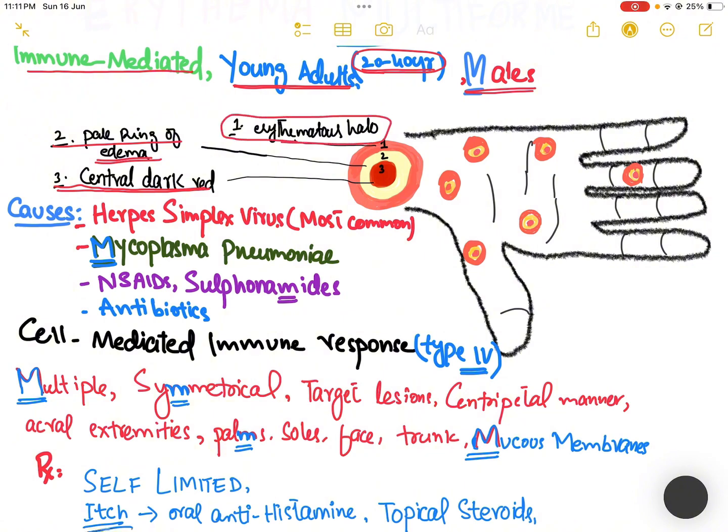The lesions are target-shaped. Causes of erythema multiforme include multiple factors. The most common cause is herpes simplex virus infection, followed by mycoplasma pneumonia, and then drugs like NSAIDs, sulfonamides, and antibiotics.